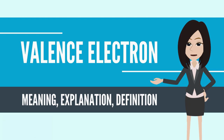Similar to an electron in an inner shell, a valence electron has the ability to absorb or release energy in the form of a photon. An energy gain can trigger an electron to move — jump — to an outer shell. This is known as atomic excitation. Or the electron can even break free from its associated atom's valence shell. This is ionization, to form a positive ion.